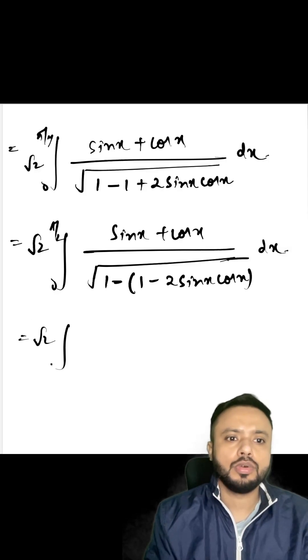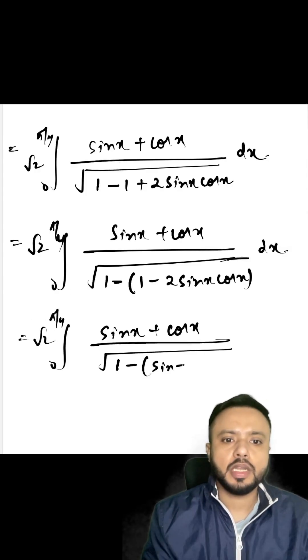So it will be root 2 from 0 to π/4 sine x plus cos x upon root of 1 minus (sine x minus cos x) whole square dx.